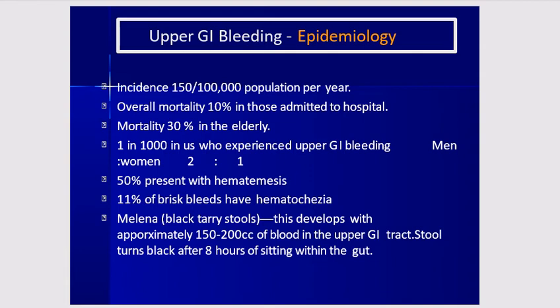The incidence of upper GI bleeding is 150 patients per 100,000 population per year. Overall mortality is 10% in those admitted to hospital, and mortality rises to 30% in the elderly. One in 1,000 patients in the United States experience upper GI bleeding. Men are twice as commonly affected as females. Fifty percent present with hematemesis. Melena develops with approximately 150 to 200 cc of blood, and stools turn black after 8 hours of blood sitting within the gut.